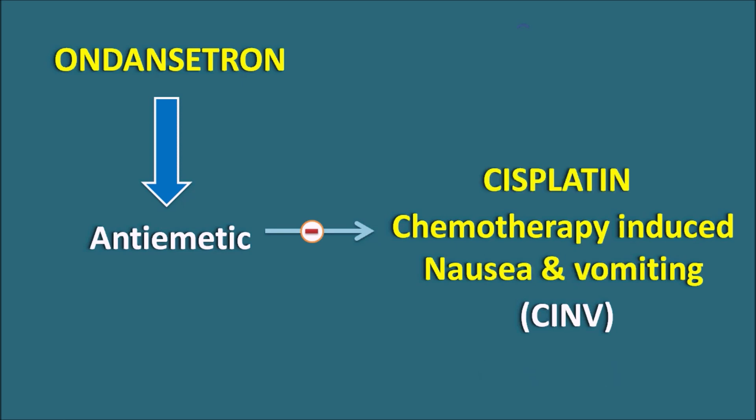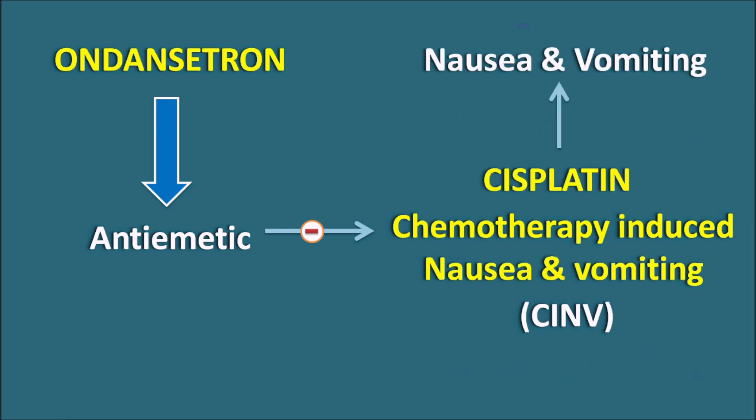One well-known drug is cisplatin, a platinum compound which can produce nausea and vomiting as one of its important side effects. Ondansetron can inhibit the nausea and vomiting produced by cisplatin. The question is: how is this drug useful in the treatment of chemotherapy-induced nausea and vomiting?